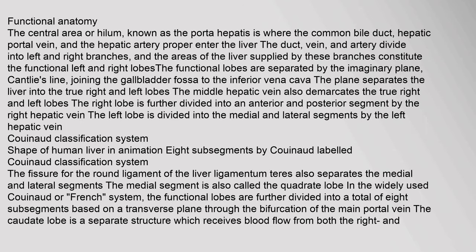The porta hepatis is where the common bile duct, hepatic portal vein, and hepatic artery proper enter the liver. These divide into left and right branches, and the areas supplied by these branches constitute the functional left and right lobes. The functional lobes are separated by Cantlie's line joining the gallbladder fossa to the inferior vena cava. The right lobe is further divided into anterior and posterior segments by the right hepatic vein, and the left lobe into medial and lateral segments by the left hepatic vein.